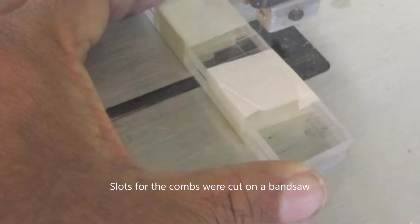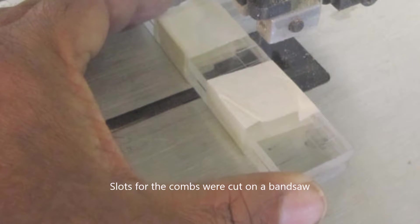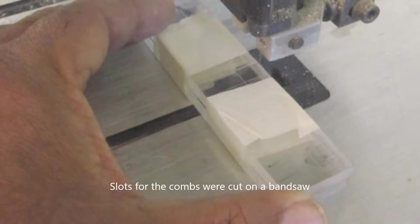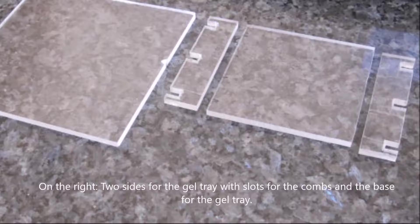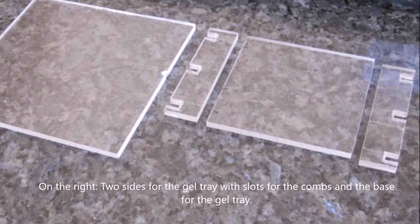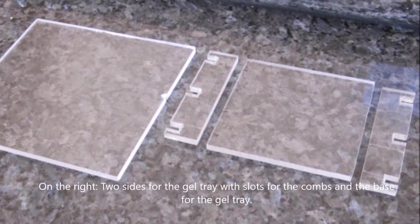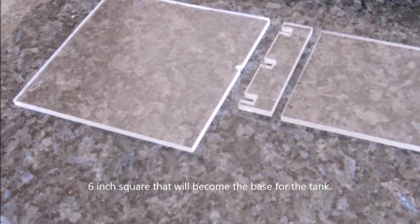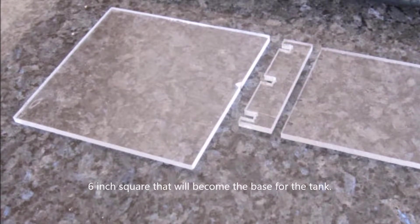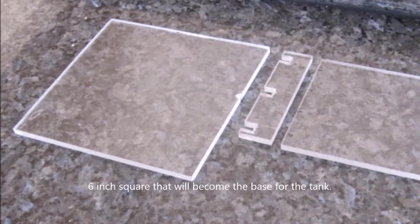I cut the slots, the small slots on my band saw, that produces genuinely smooth cuts. On the right, you can see the pieces cut for a gel tray. These are very simple. On the left is a 6-inch square, which will form the base of the whole electrophoresis unit.